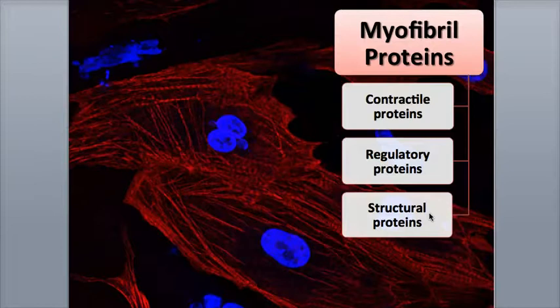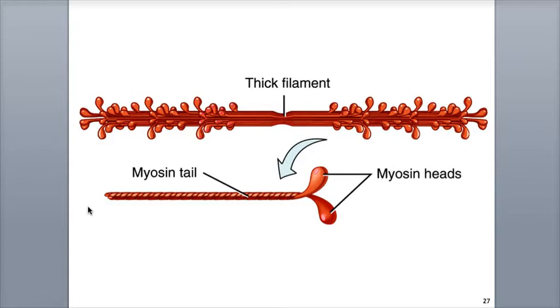They also allow the myofibril to be extensible and elastic, and connect the myofibrils to the sarcolemma. The two contractile proteins are actin and myosin, with actin forming the thin filament and myosin forming the thick filament. Myosin is a motor protein that takes the chemical energy of ATP and transforms it into the mechanical energy of movement. About 300 myosin proteins make up one single thick filament.